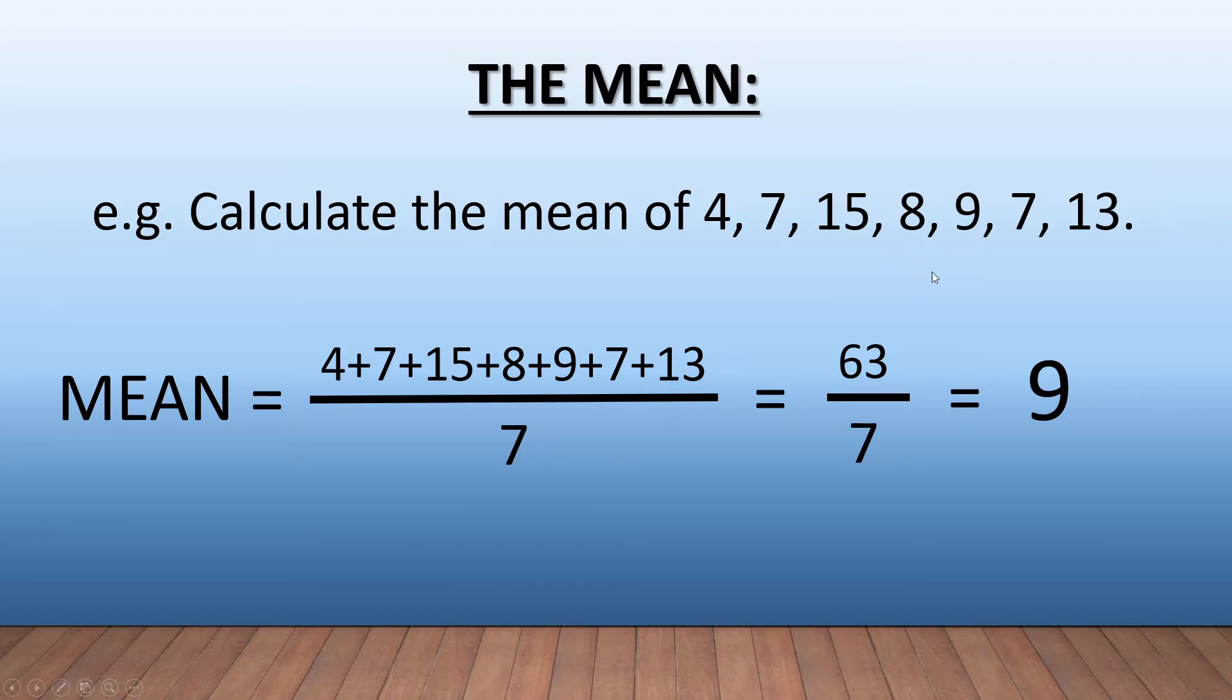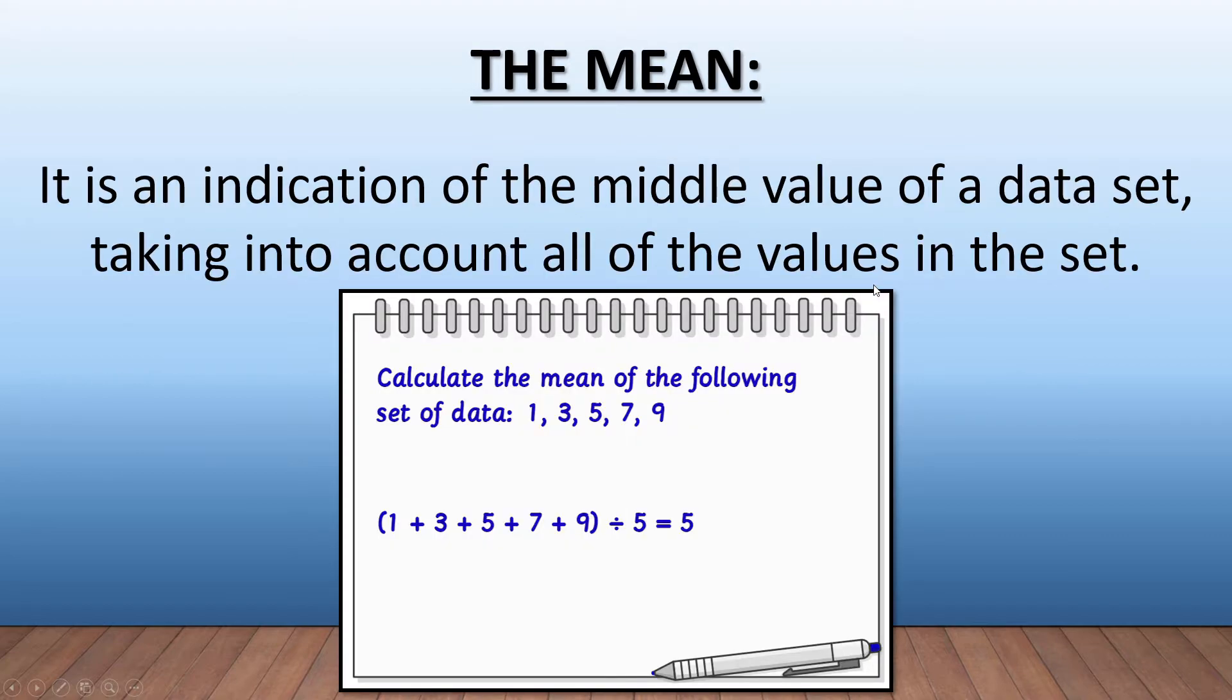Here's another one: it is an indication of the middle value of a data set, taking into account all of the values in the data set. So here's another one that says calculate the mean of 1, 3, 5, 7, 9.